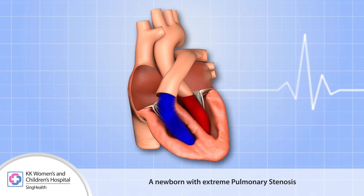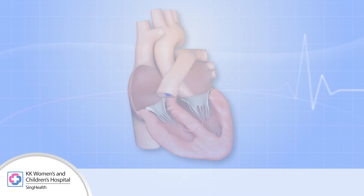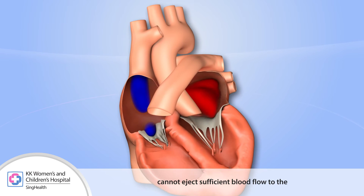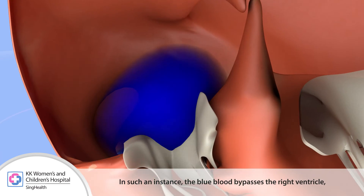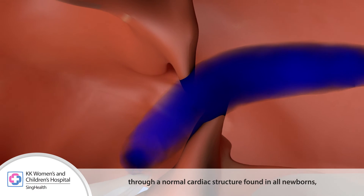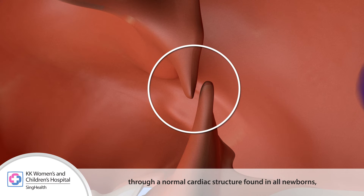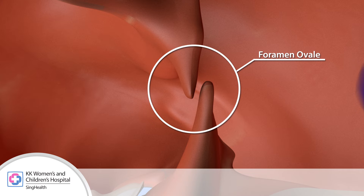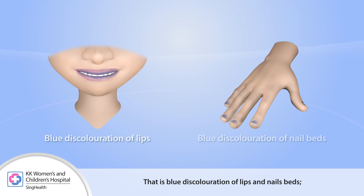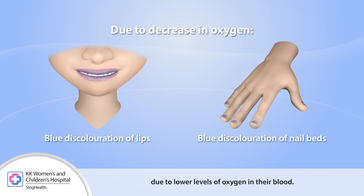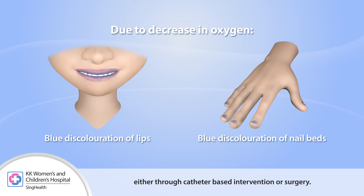A newborn with extreme pulmonary stenosis presents an emergency situation. This is because the right ventricle cannot eject sufficient blood flow to the pulmonary artery to maintain normal blood oxygen level. In such an instance, the blue blood bypasses the right ventricle, flowing to the left side of the heart through a normal cardiac structure found in all newborns called the foramen ovale. Newborns with critical pulmonary stenosis will therefore have cyanosis — blue discoloration of lips and nail beds — due to lower levels of oxygen in their blood. This group requires early intervention to restore blood flow to the lungs, either through catheter-based intervention or surgery.